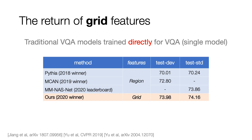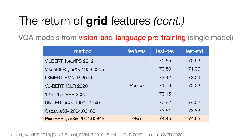Interestingly, we are pleased to see that there is already a nice return of grid features for VQA this year. Our own effort that directly trains VQA models on improved grid features is winning the challenge. And even for VQA models fine-tuned from vision and language pre-training, there is a recent work called PixelBERT that used grid features and got the best single model result we know of.